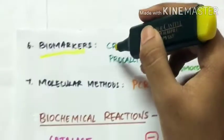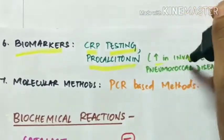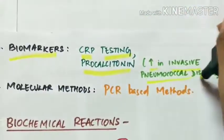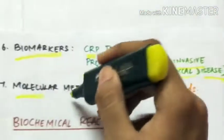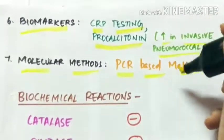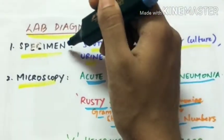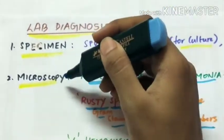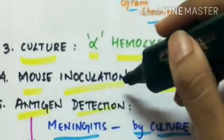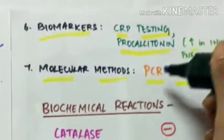Biomarkers. This includes testing of C-reactive protein and procalcitonin which is increased in invasive pneumococcal disease. The last is molecular methods which include PCR based methods, polymerase chain reaction based methods. So the lab diagnosis includes collection of specimen, visualizing under microscope, culture, mouse inoculation if the bacteria are scanty, antigen detection, testing of biomarkers like C-reactive protein and procalcitonin, and molecular methods like PCR.